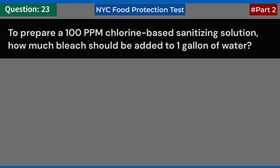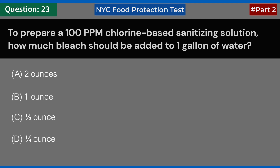To prepare a 100 ppm chlorine-based sanitizing solution, how much bleach should be added to 1 gallon of water? A. 2 ounces. B. 1 ounce. C. Half an ounce. D. 1 quarter ounce. Answer: B. 1 ounce.